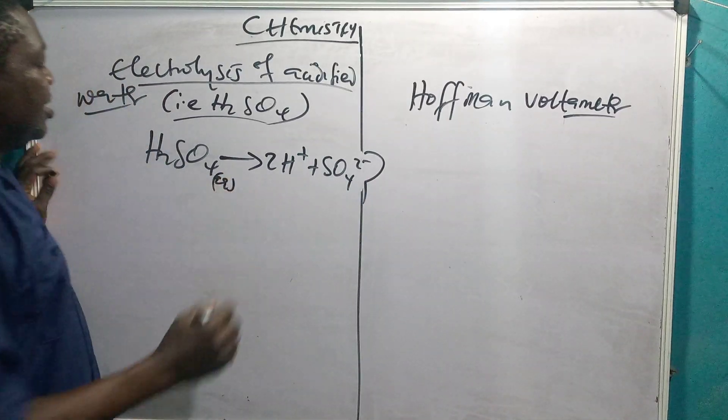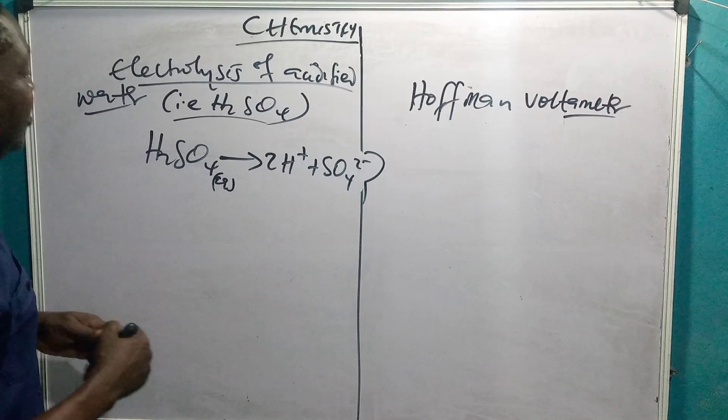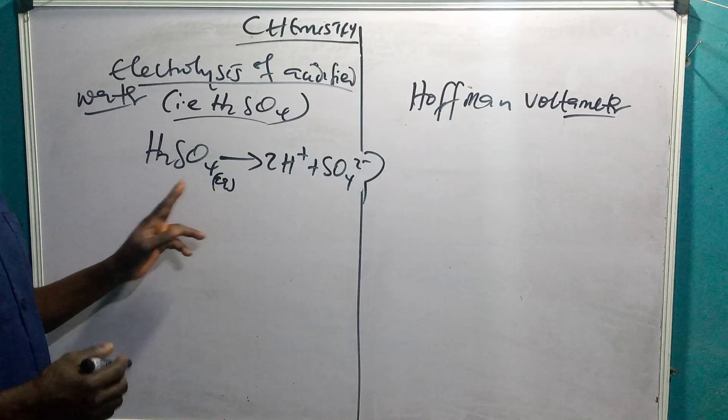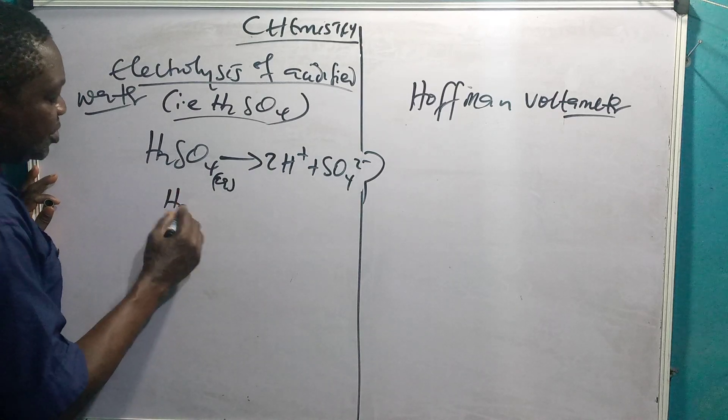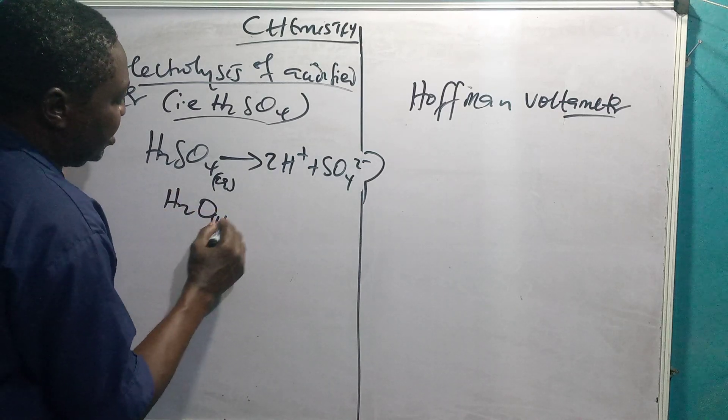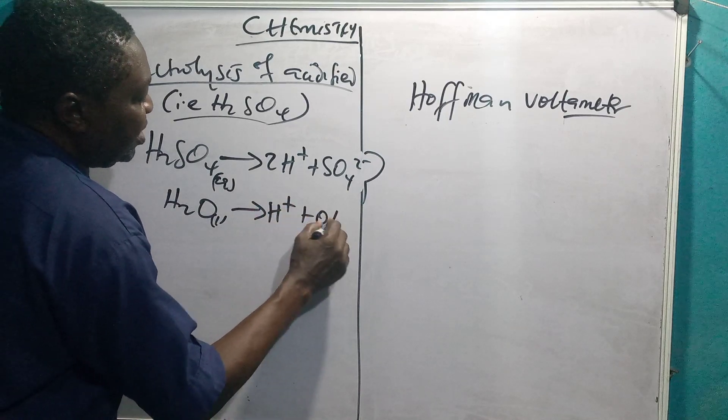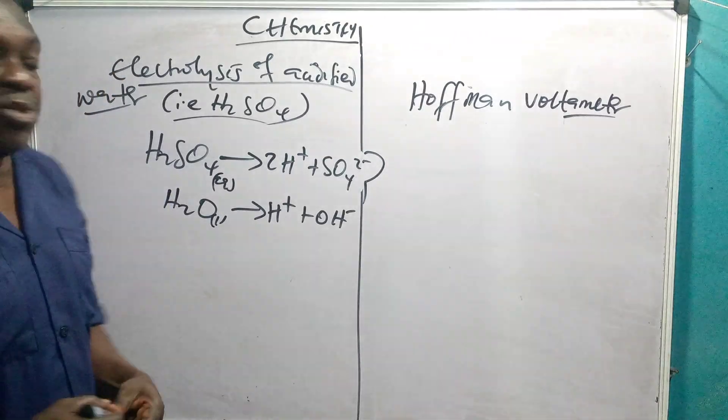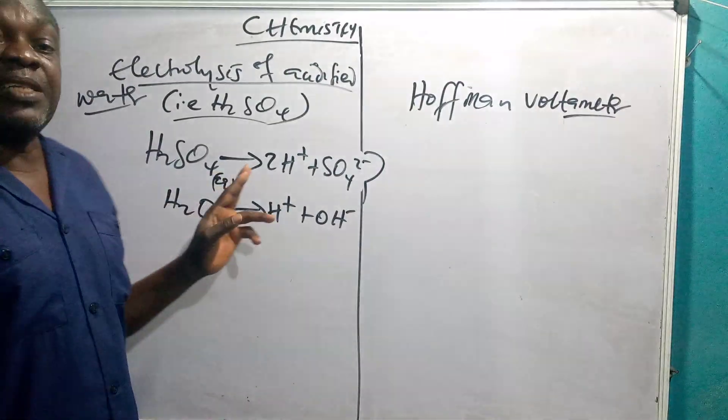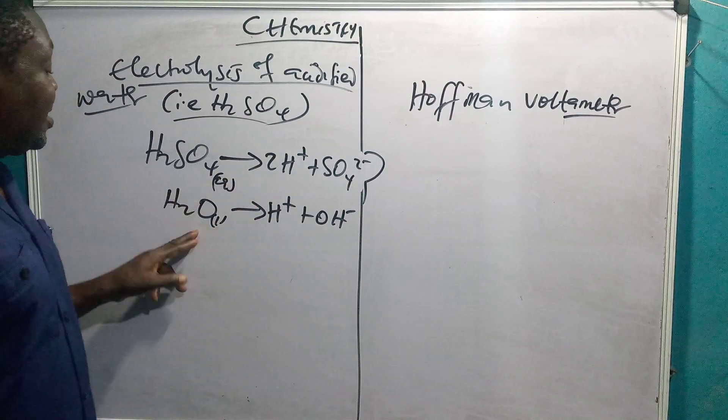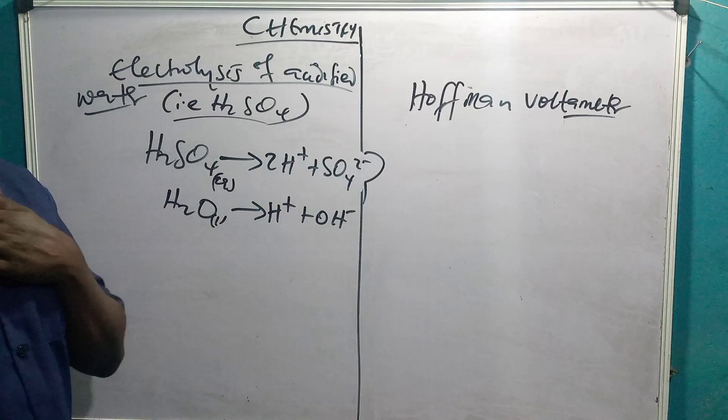Remember, it is a neutral solution. Since it is a neutral solution, the water also will undergo ionization. So you have H2O. This is a liquid that you ionize to give you H+ OH-. So these are the two solutions that will undergo ionization. The H2SO4 that is actually the electrolyte and the water in which H2SO4 is dissolved will also undergo ionization.